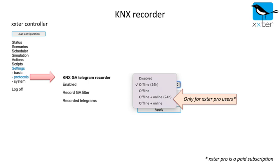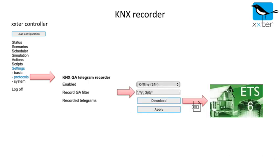Please note that when recording offline, only the last 1000 telegrams will be stored on the device. For uploading data to the extra cloud, the professional needs to have a pro subscription. With the group address filter you can choose which telegrams you are interested in. In this example, all telegrams of main group 1 are recorded, and the telegrams of middle group 0 of main group 3.